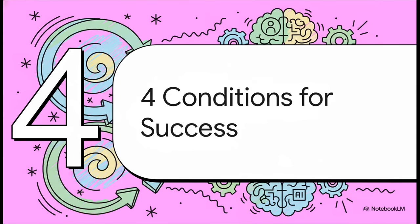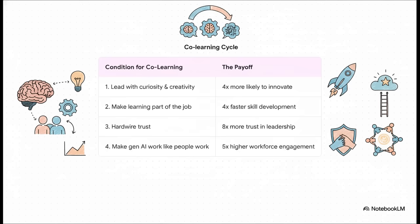So, this all sounds great, but how do you actually create an environment where this kind of co-learning can really take off? Well, the research points to four absolutely essential conditions that organizations have to build. And you have to see these numbers. The payoff for getting this right is just staggering. First, when leaders encourage curiosity, not just demand efficiency, their companies are four times more likely to innovate. Four times! Second, when learning is actually part of the job, not some extra thing you have to do, people develop skills four times faster. Third, when you build trust through clear ethics and transparency, you get eight times more trust in leadership.